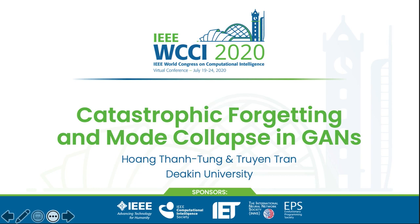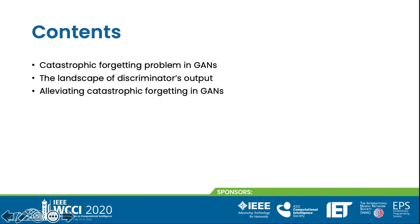Hi everyone, I am Hoang Thanh Tung. Today I would like to present our work named Catastrophic Forgetting and Mode Collapse in GANs. My presentation consists of three parts: catastrophic forgetting problem in GANs, the landscape of the discriminator output, and alleviating the catastrophic forgetting problem in GANs.